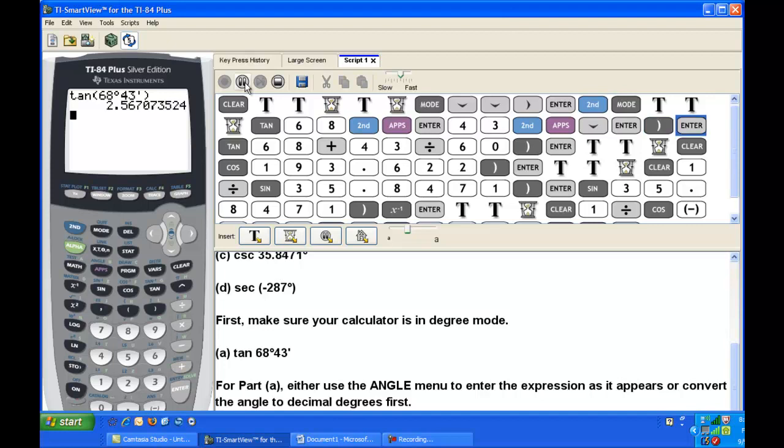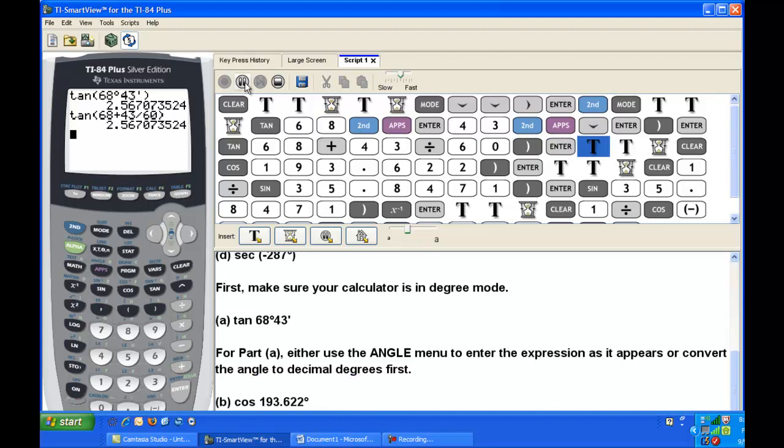You can see that the value of that is approximately 2.567. The other way you can get the value is to remember that there are 60 minutes in one degree. So if we want to convert 43 minutes to degrees, we just divide 43 by 60. If you enter tangent of 68 plus 43 divided by 60, that will give you the same value. You don't have to use the degree symbol because we put the calculator in degree mode.